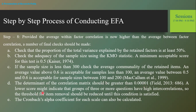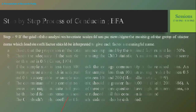The determinant of the correlation matrix should be greater than the threshold value. A lower score might indicate that a group of three or more questions have high inter-correlation. When you find high inter-correlation at a significant level, you need to identify those factors and reduce the threshold for item removal until this condition is satisfied. The Cronbach alpha coefficient for each scale can also be calculated.